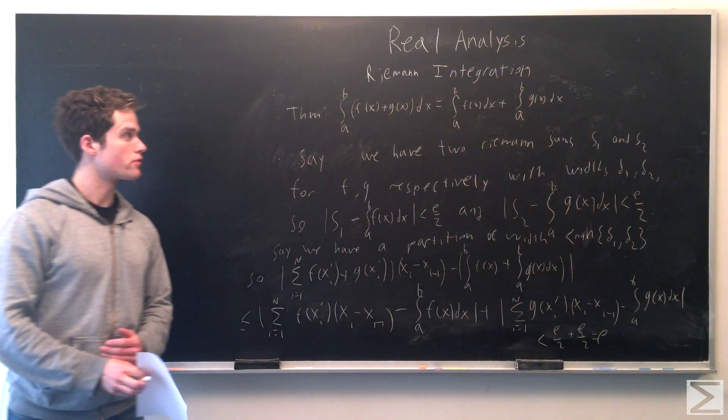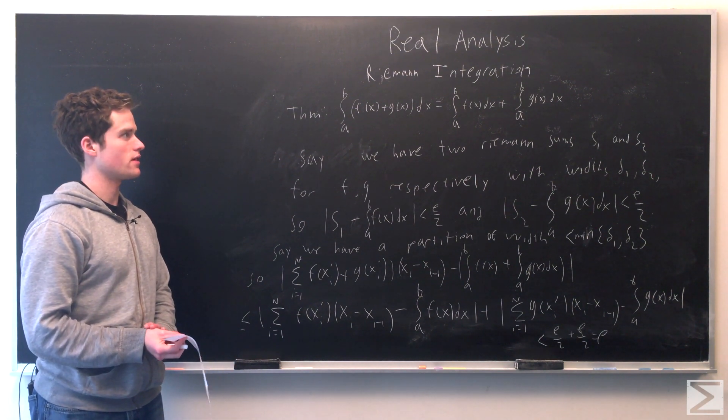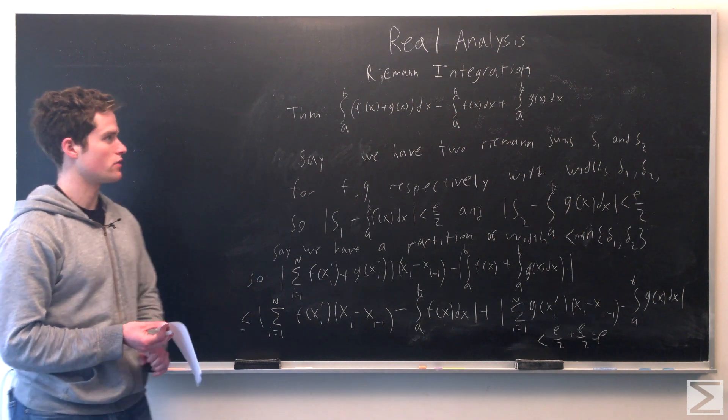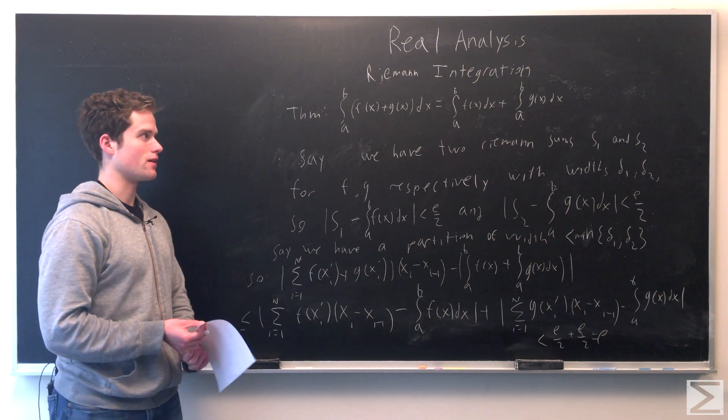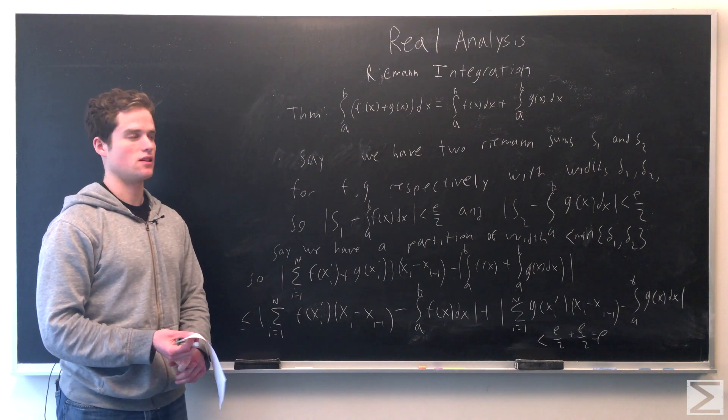We can prove that the integral on the interval [a,b] of f(x) + g(x) dx for two Riemann integrable functions f(x) and g(x) equals the integral from a to b of f(x) dx plus the integral from a to b of g(x) dx.